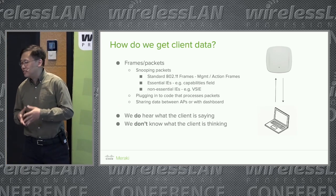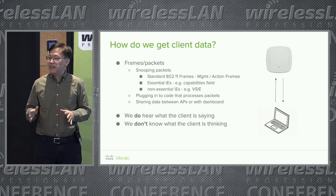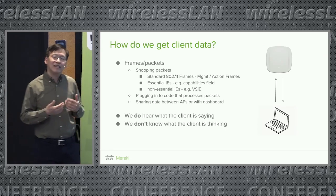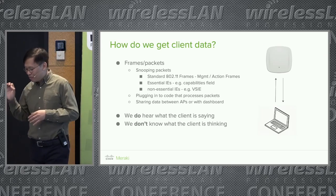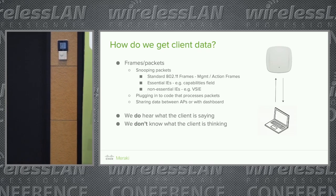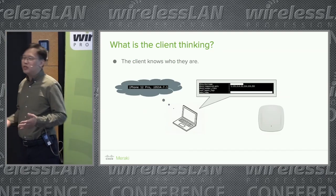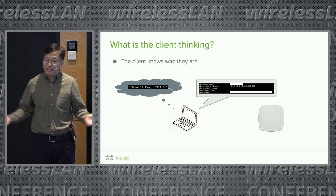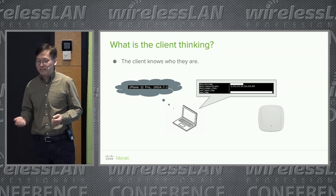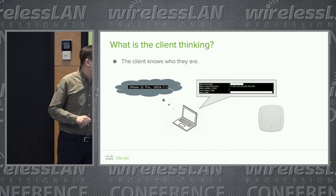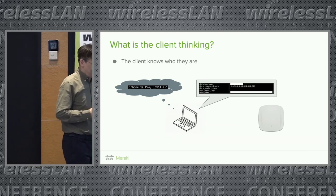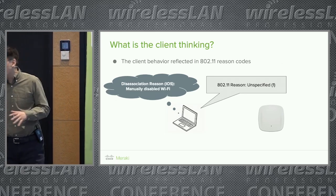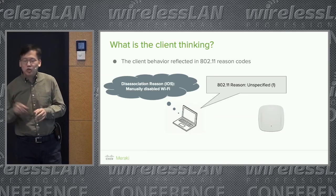We talked a lot about packet captures and site surveys this morning. We do all of this because APs are relying on client data. The problem is client data is only half true — half right, half blinded. Why blinded? Because clients never tell us who they are or what they are thinking. We know a client device runs iOS or macOS Sonoma, but can we get that from profiling? We do all this reverse engineering but we can only go so far.